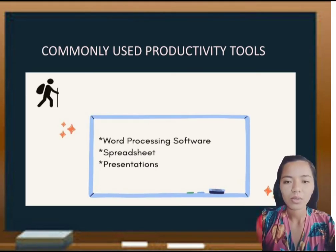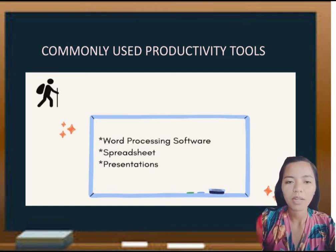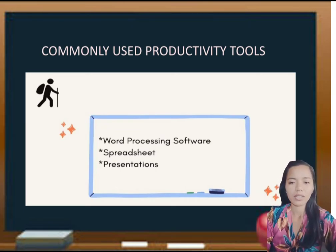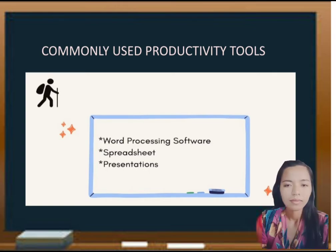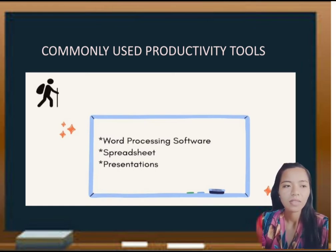Common productivity tools. First, word processing software is designed to allow users to manipulate and design text. Spreadsheet is a computer program that can capture, display, and manipulate data arranged in rows and columns. Presentation is software used to create a sequence of text and graphics, often audio and video, to accompany a speech or public presentation.